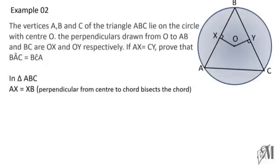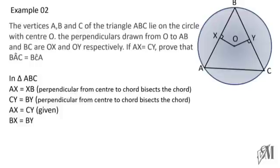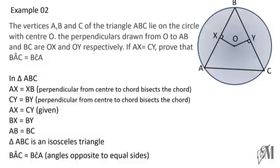Let's consider triangle ABC. It is given that AX is equal to XB and CY is equal to BY, because since OX and OY are perpendicular they bisect the two chords. Therefore we can say BX is equal to BY, and AB is equal to BC because it is given AX is equal to CY. Therefore we can show that triangle ABC is an isosceles triangle where sides AB and BC are equal to one another. Since in an isosceles triangle the angles opposite to equal sides are also equal, we can show that angle BAC is equal to angle BCA.